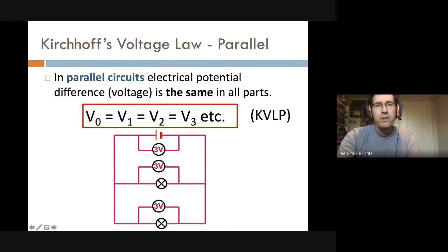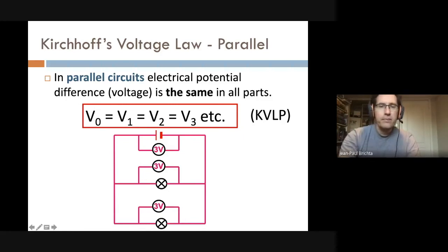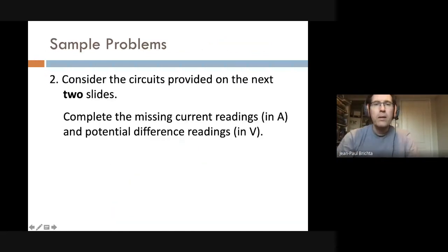In a parallel circuit the situation is different: the voltage the battery provides is the same across each of the branches. If the battery provides three volts, there will be three volts across the first lamp's branch and three volts across the second lamp's branch — all branches have the same voltage.